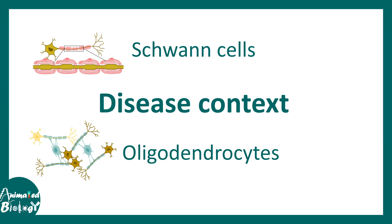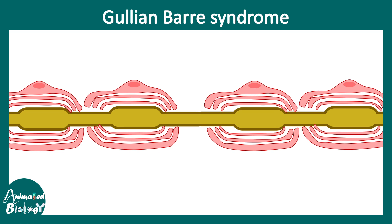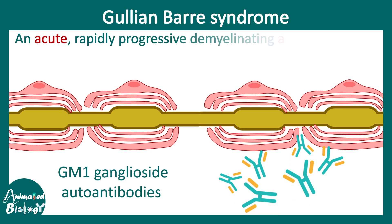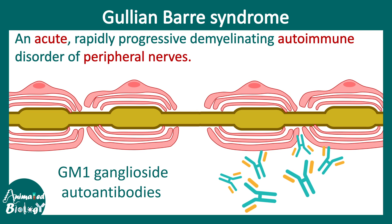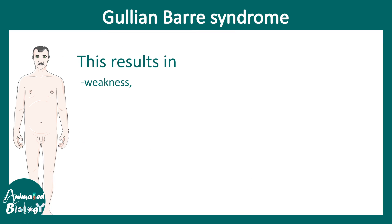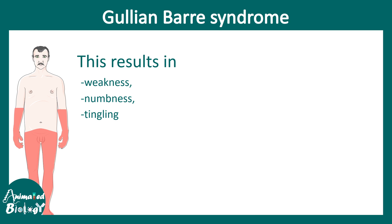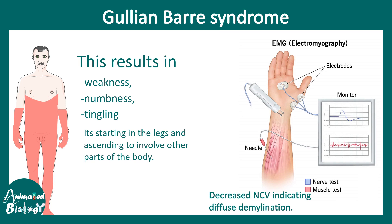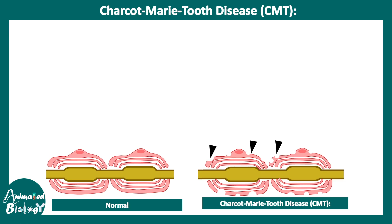Guillain-Barré syndrome is an acute, rapidly progressive demyelinating disorder that is also autoimmune in nature. The immune system targets GM1 gangliosides present in Schwann cells, leading to damage of these Schwann cells and loss of neuronal insulation. This results in weakness, numbness, and tingling starting from distal to proximal areas, and a decrease in nerve conduction velocity on electromyography.